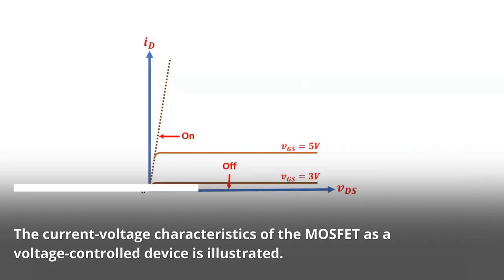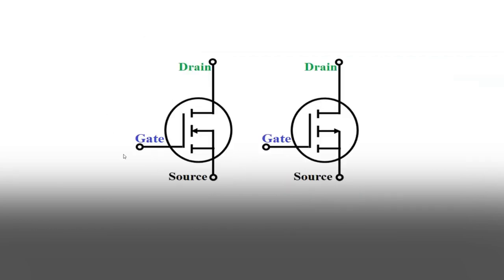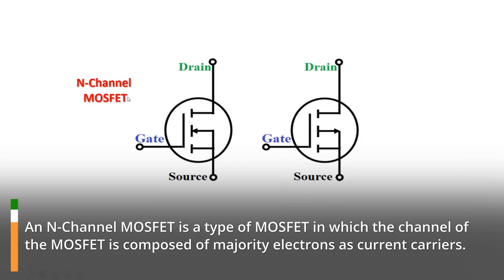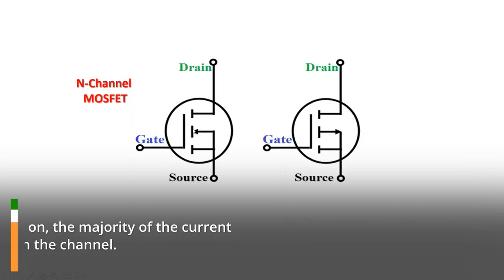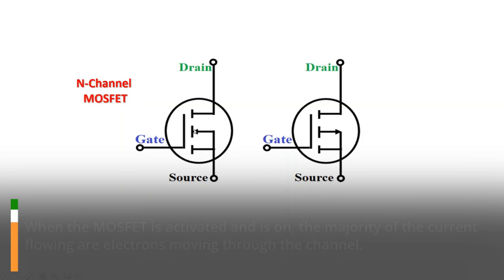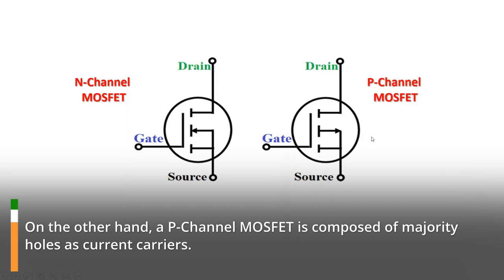The current voltage characteristics of the MOSFET as a voltage-controlled device is illustrated. A MOSFET device is classified into two main categories, namely N-channel MOSFET and P-channel MOSFET. An N-channel MOSFET is a type of MOSFET in which the channel is composed of majority electrons as current carriers. When the MOSFET is activated and is on, the majority of the current flowing are electrons moving through the channel.